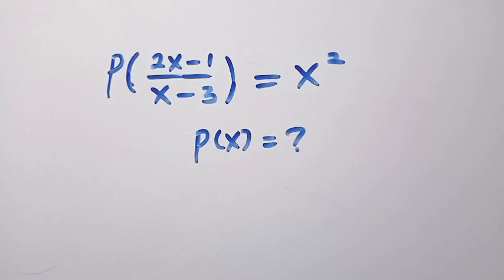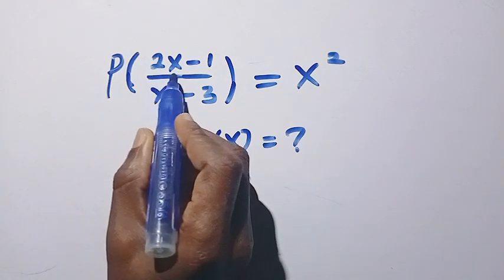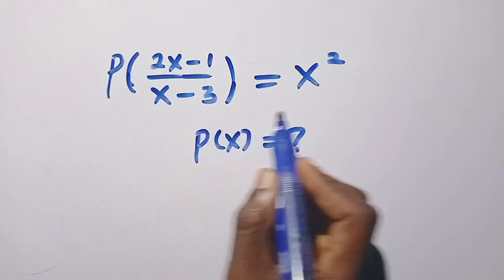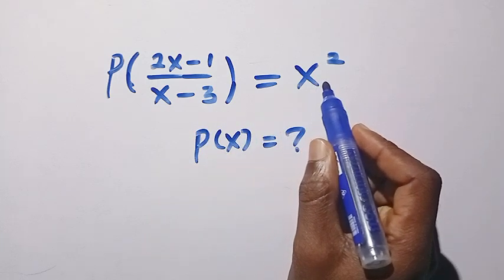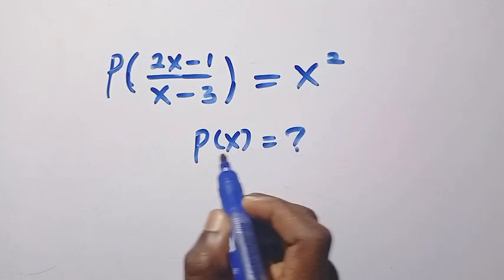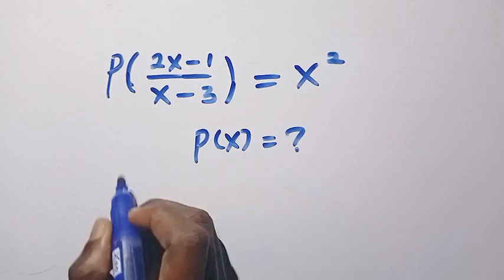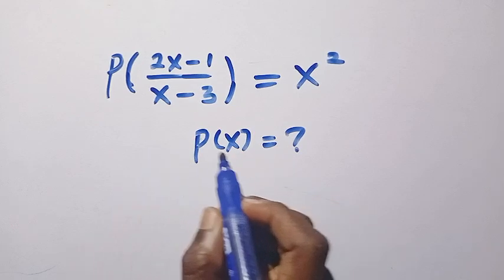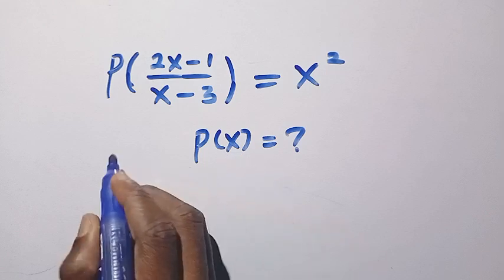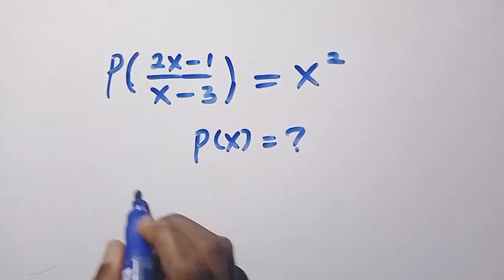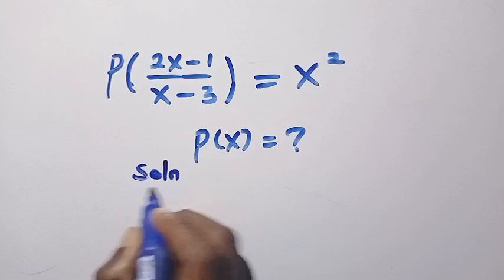Good day viewers, you are welcome. We will look at how to solve these nice functional equations, given that p of (2x minus 1) divided by (x minus 3) equals x squared. We want to find p of x. At the end of this video, after we find p of x, I will show you how we check these functional equations. So let's start with the solution first.